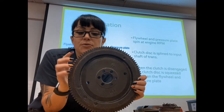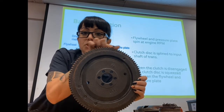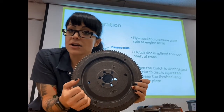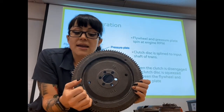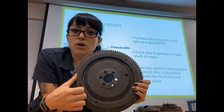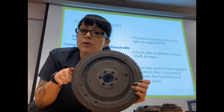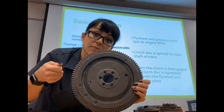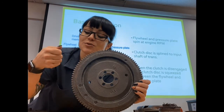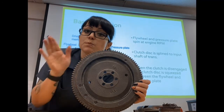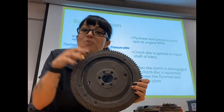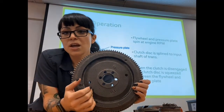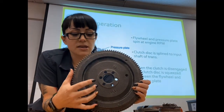The flywheel has a bunch of teeth on the outside of it — it is one gigantic gear. Those teeth are so your starter motor can engage. When you engage your starter motor via the ignition switch, it's going to spin your flywheel, which will spin your crankshaft, which will start the engine.